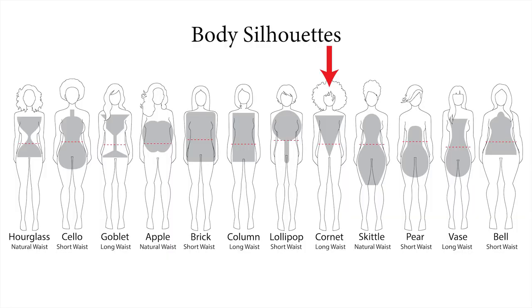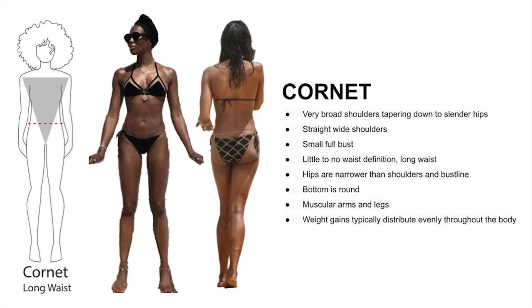The next top-heavy shape is the cornet — an athletic body shape. Here are the key features: very broad shoulders tapering down to slender hips, straight wide shoulders, small full busts. Little to no waist definition, long-waisted. Hips are narrower than the shoulder and bust lines. Bottom is round. Muscular arms and legs. Weight gain is typically distributed evenly throughout the body.